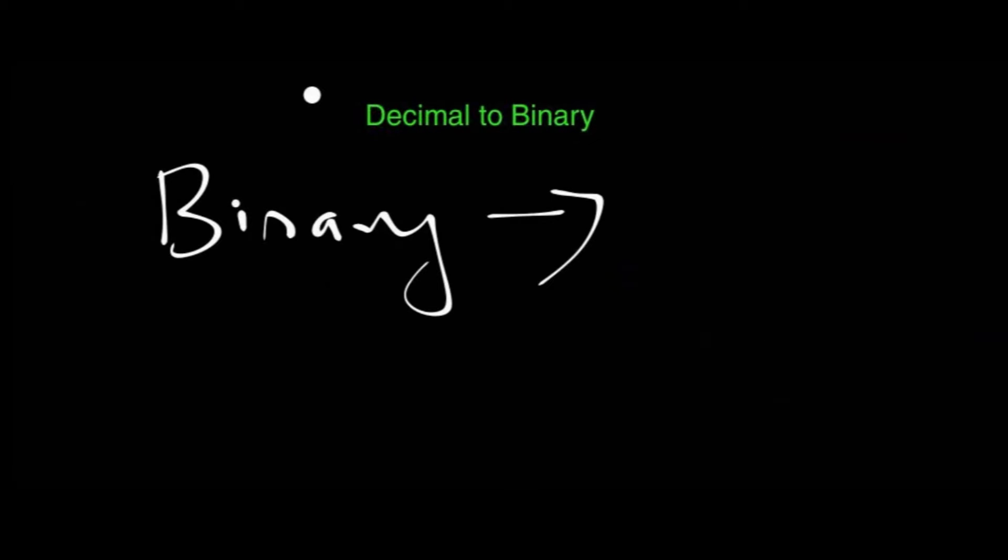Binary number system has only two basic symbols: 0 and 1. Therefore, every number in this number system is made up of these two symbols. So can you say what is the base of this number system? Obviously, it is 2. Since computers use binary number systems and we humans use decimal number systems, you can understand the importance of decimal to binary and binary to decimal conversion.